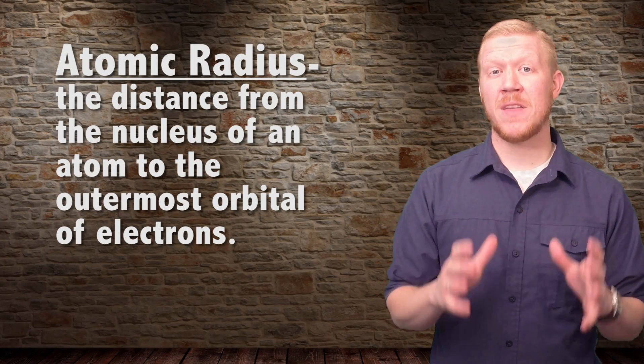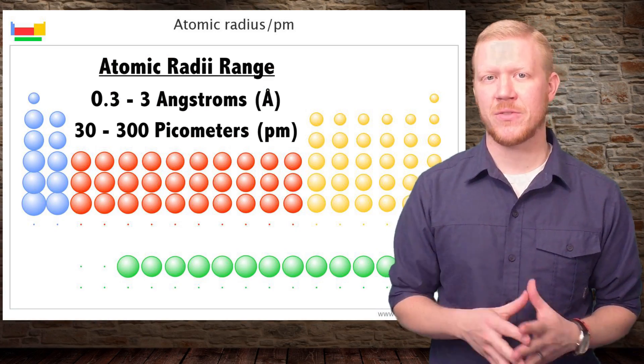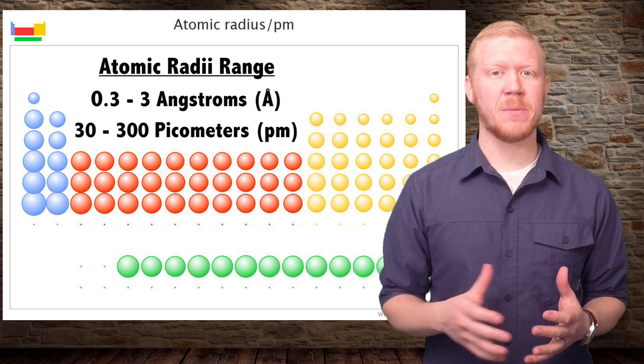In terms of atomic radii, the size of atoms ranges from about 0.3 to 3 angstroms, which is equivalent to 30 to 300 picometers.